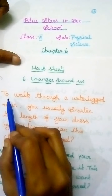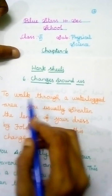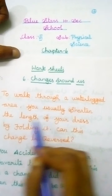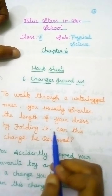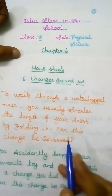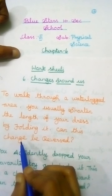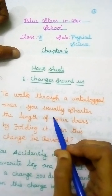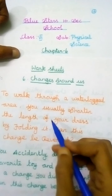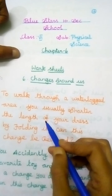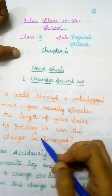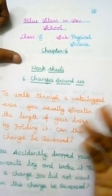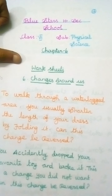First question: To walk through a waterlogged area, you usually shorten the length of your dress by folding it. Can this change be reversed? Is this process reversible or irreversible? You write the answer only.